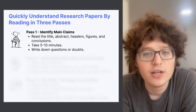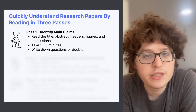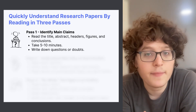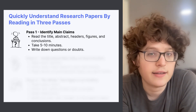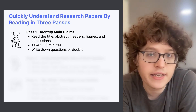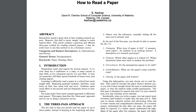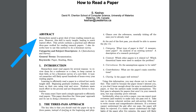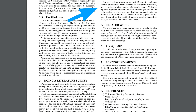In pass one, your goal is only to understand the main idea. This should take five to ten minutes. Here we'll just read the main parts of the paper: its title, abstract, headers, figures, conclusion, and references. Let's go through these one by one.